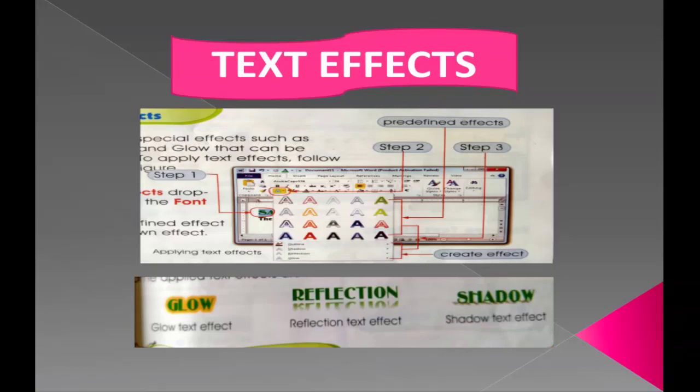For example, here we have Glow — first we selected the glow effect, then clicked on the Glow text effect. We also have the Reflection text effect and the Shadow text effect. If you want to add a text effect, select the text, choose the effect, and apply it. You can also choose the color of the text effect.